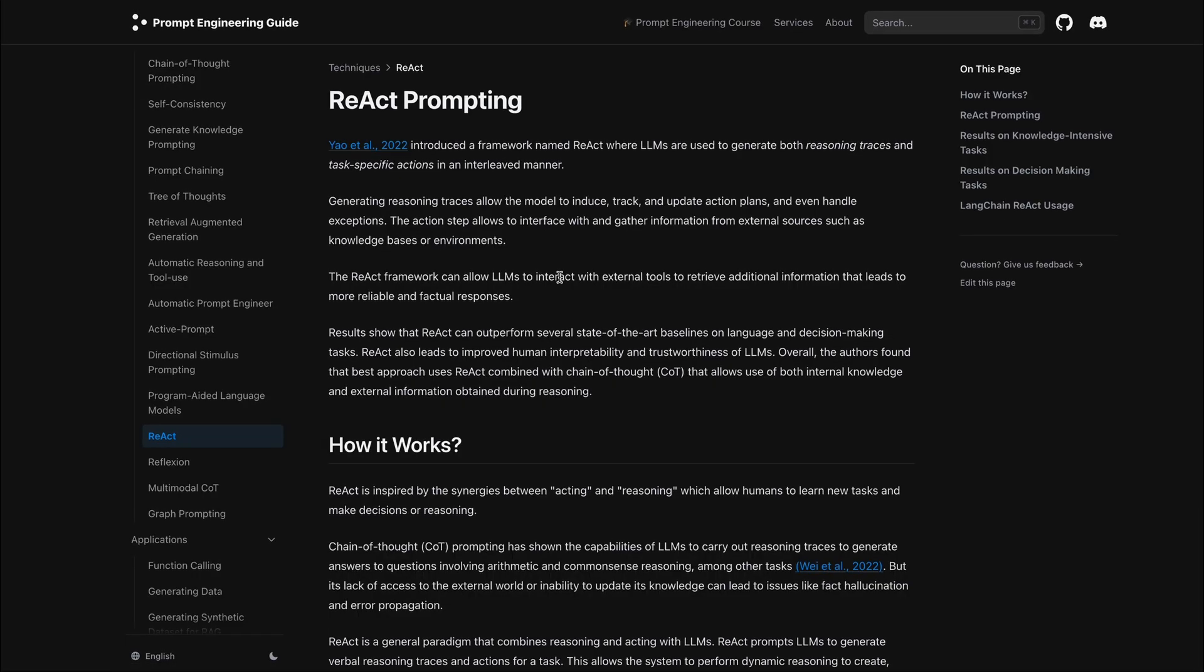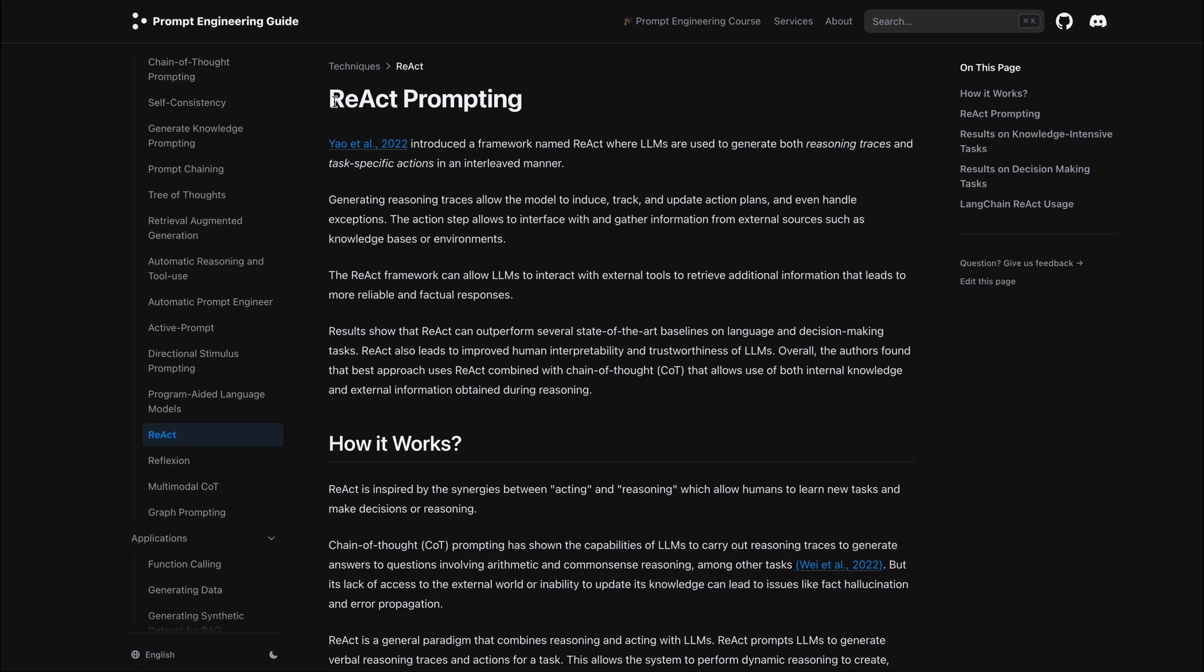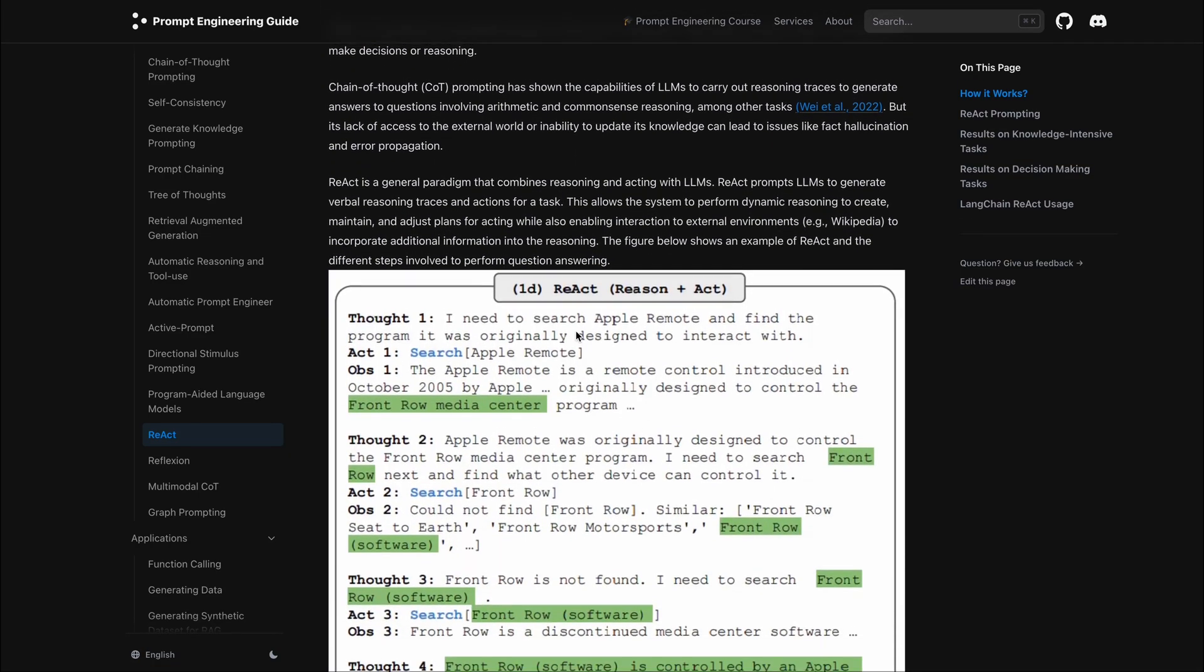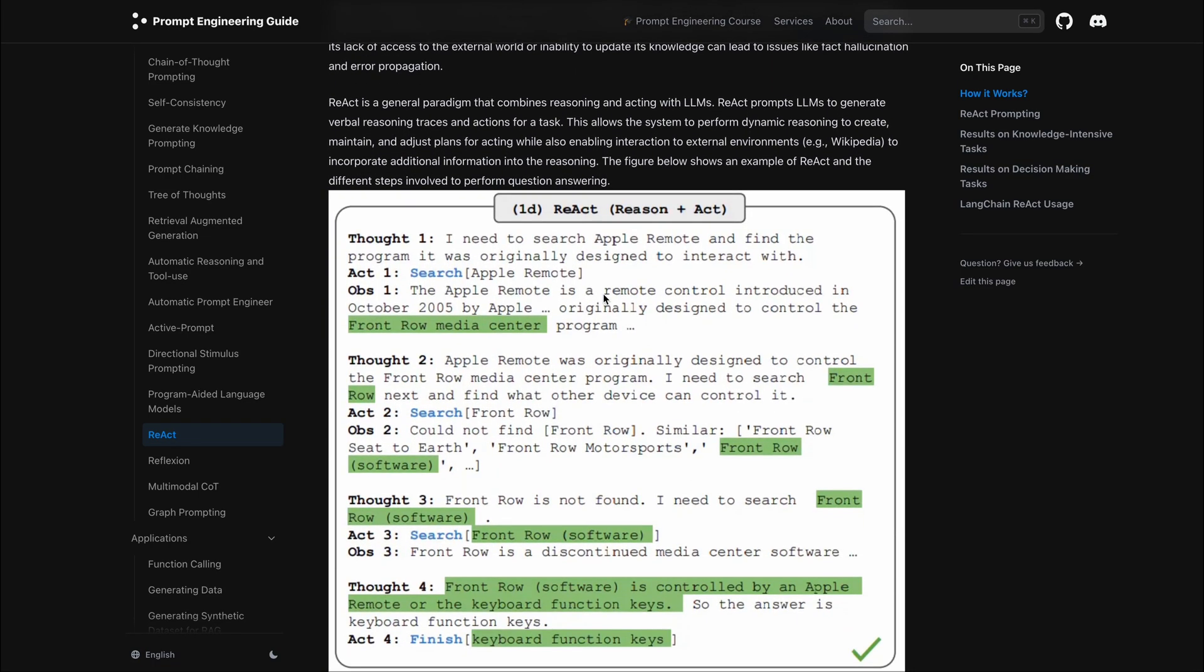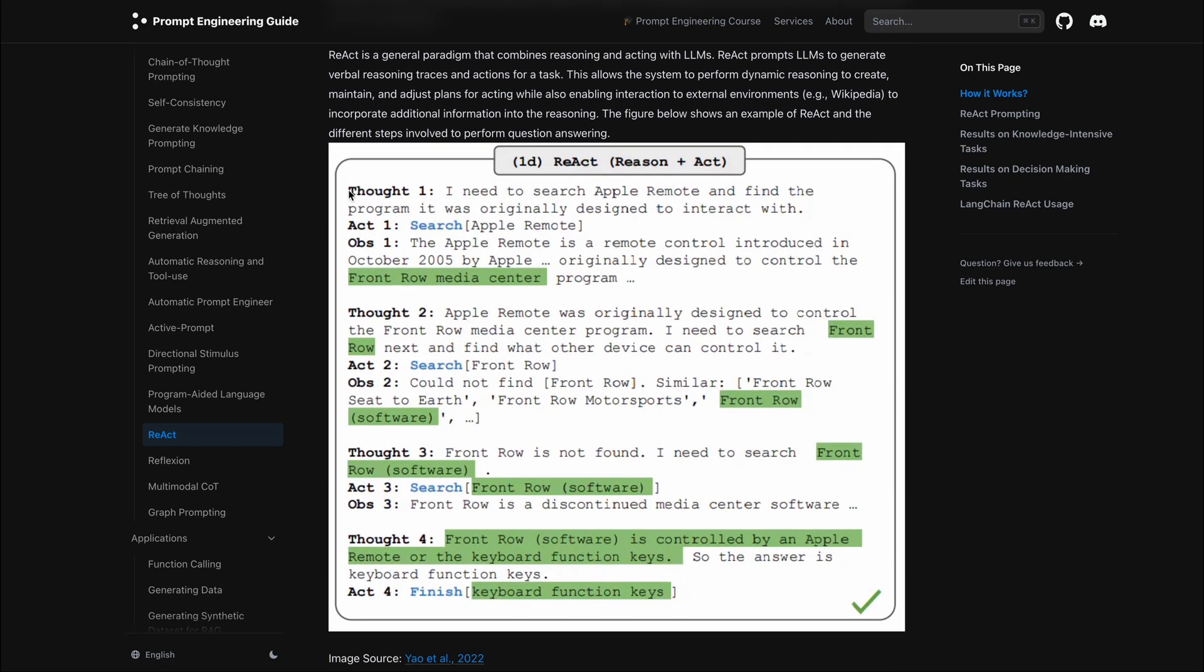But in case of autonomous AI agents, they should not only reason, but also act based on the reasoning. That brings us to another technique that enables both reasoning and action, and it's called REACT. REACT technique prompts LLMs to generate verbal reasoning and actions for a task. The actions sometimes involve interaction with external tools.